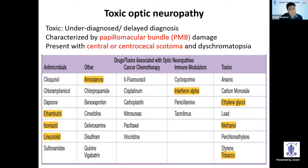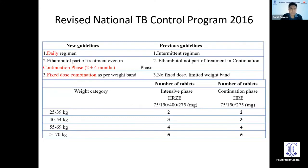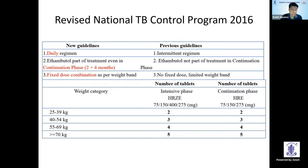Toxic optic neuropathy is caused by damage to the papillomacular bundle, and patients present with central or centrocecal scotomas and color-related issues. The National TB Control Program changed its guidelines in 2016, implemented around 2017. Earlier it was an intermittent regimen; now it's a daily regimen. Unfortunately, ethambutol is now part of the continuation phase, which it was not earlier. So ethambutol was only given for two months before, but now we are probably going to face a lot more toxicity.